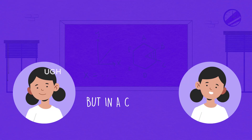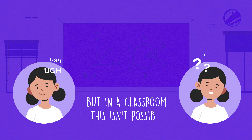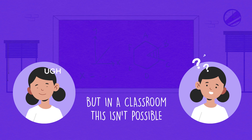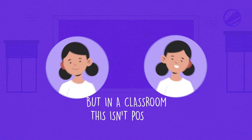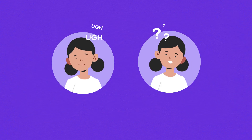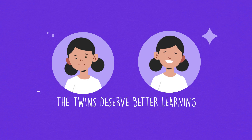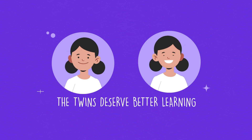But being in a classroom crammed with 40 other students makes it an uneven playing field for all 40 students. Sara and Tara are no different — they both deserve a chance to learn better, the way that suits them the best.